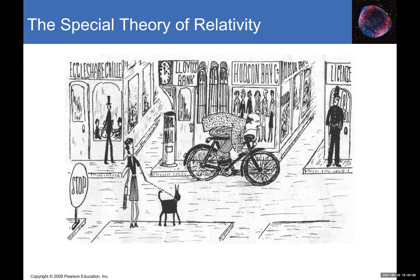Maxwell gave us the laws of electrodynamics — Maxwell's equations — and one of the important things that came out of that was that light is an electromagnetic wave. Knowing light is an electromagnetic wave means we now know what light is and how fast it moves.